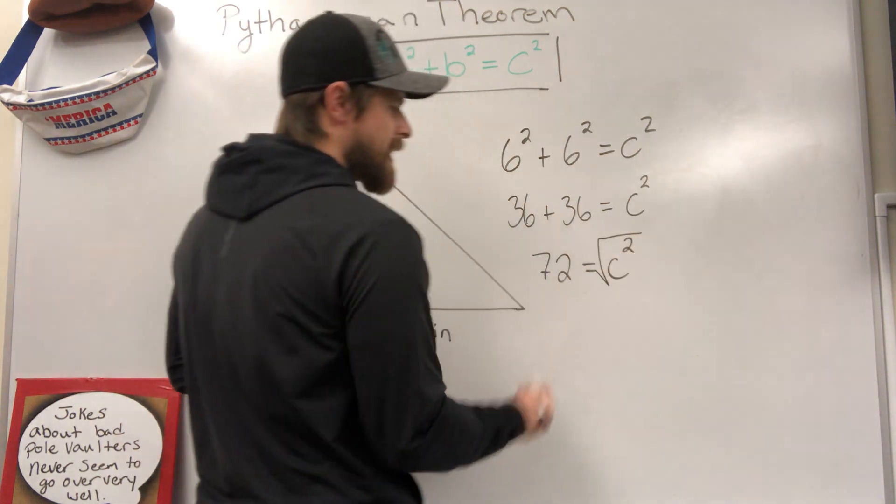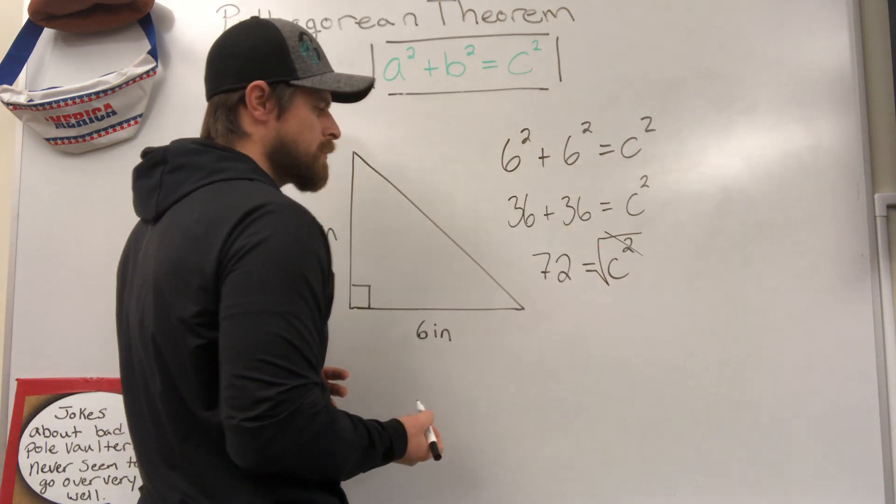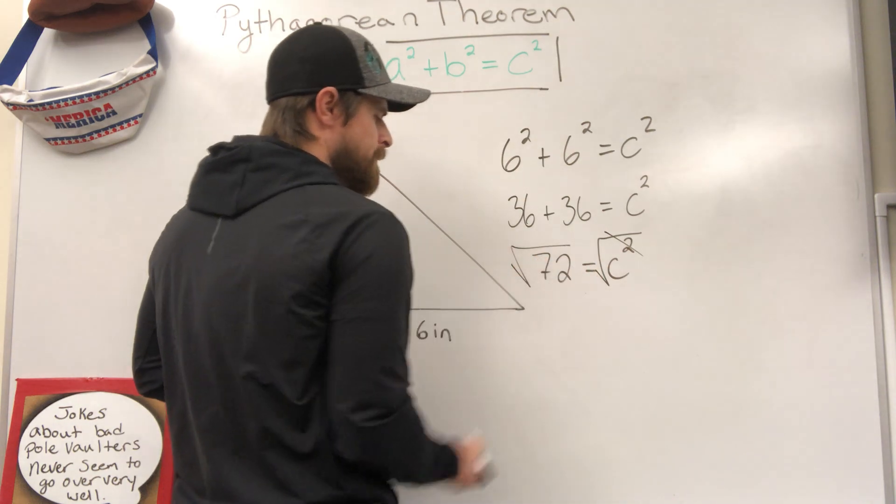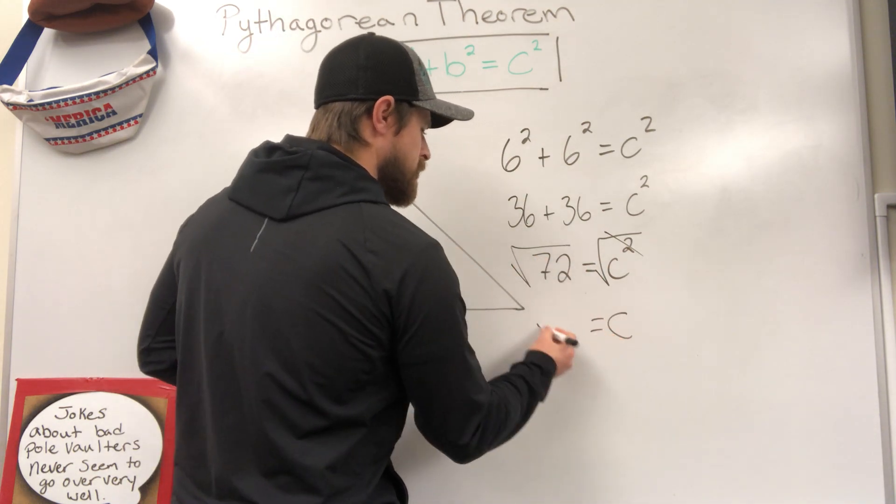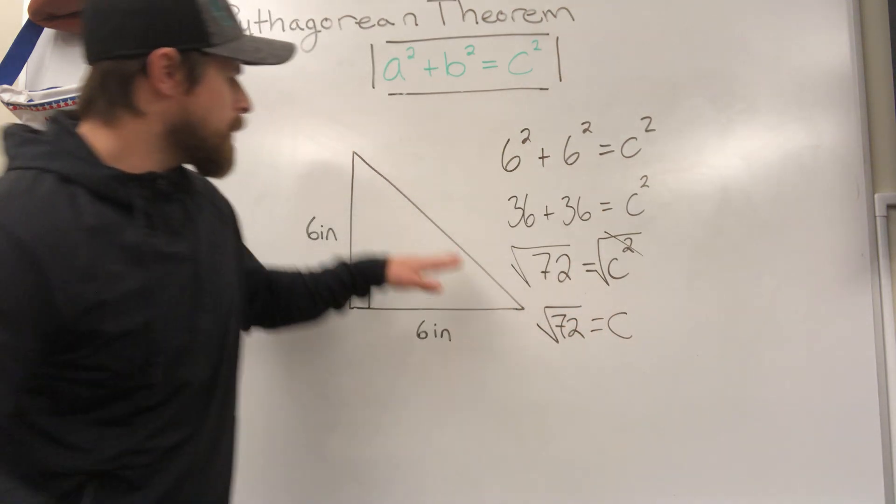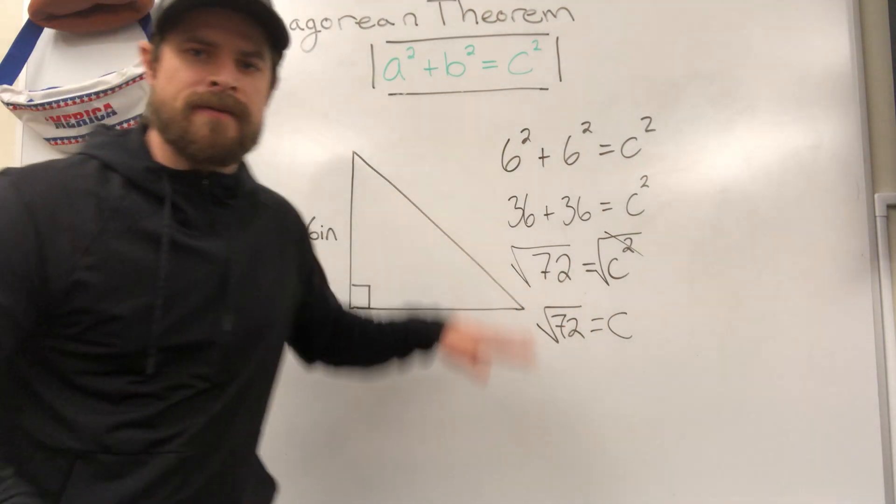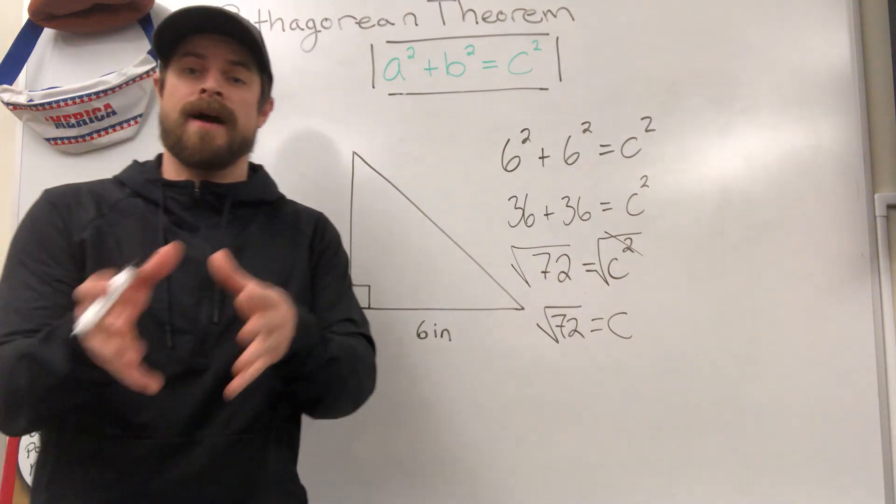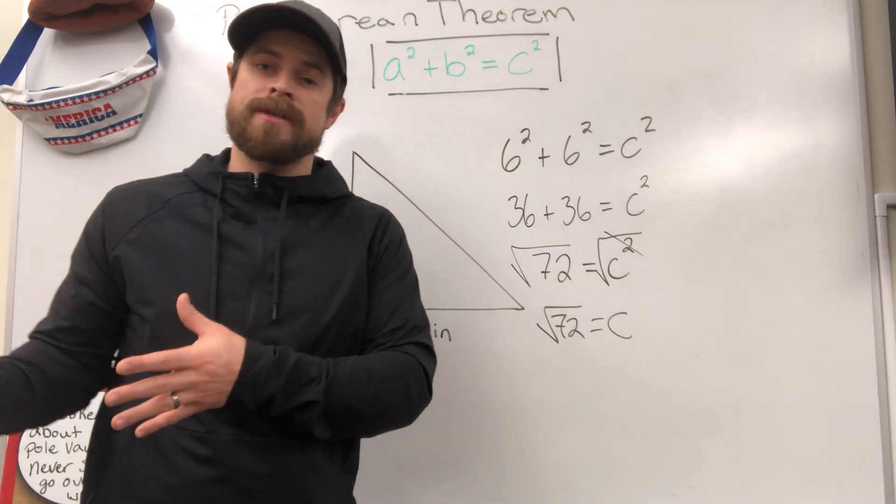but when we square root this side to cancel out the exponent of 2, and we square root the other side, we're now left with C equals the square root of 72. Now you can go up here and say this is the square root of 72, but if you're asked to simplify the radical, you have one more step involved,